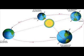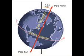Equinoxes and solstices. The points of the orbit where the Earth coincides with the ends of the minor axis are called equinoxes. Also two: which coincide with the beginning of spring — the spring equinox — and fall — the autumn equinox. The equinoxes are the days of the year in which day and night are the same length.